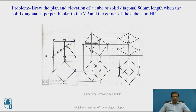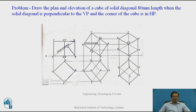A cube is one where all the faces are square — there are 4 plus 2, that is 6 faces. And what is a solid diagonal? A solid diagonal is a diagonal joining the opposite corners of different faces — that is, the base face and the top face, where corners diagonally opposite to each other are joined.